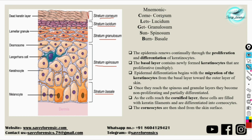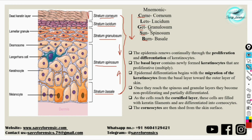From the exam point of view, these layers are important. As the NET exam complexity increases year by year, they may ask about the layers of the skin or the order in which they are arranged from outer to inner. You can remember this with a simple mnemonic: 'Come Let's Get Sun Burned' — Corneum, Lucidum, Granulosum, Spinosum, Basale.